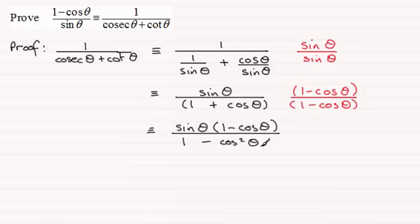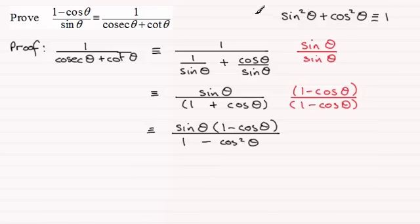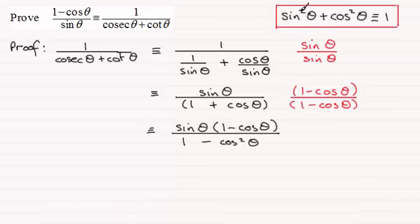We should be familiar with this identity: sine squared theta plus cosine squared theta is identical to 1. If we subtract cosine squared theta from both sides, we get sine squared theta is identical to 1 minus cosine squared theta. So 1 minus cosine squared theta in the denominator can be replaced with sine squared theta.